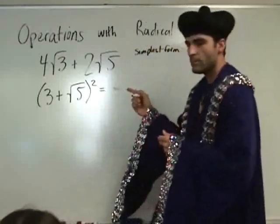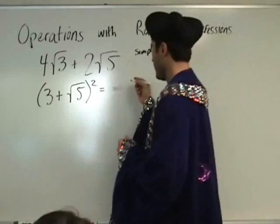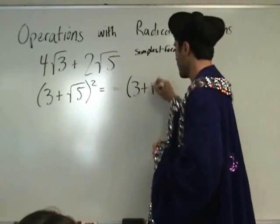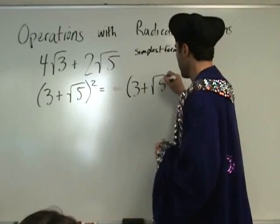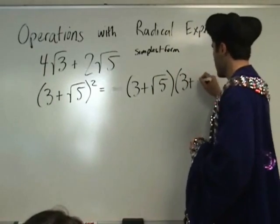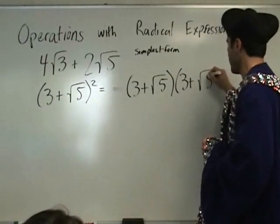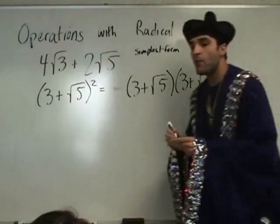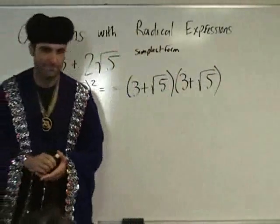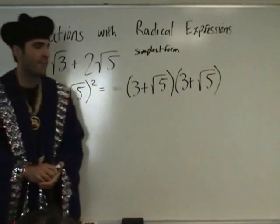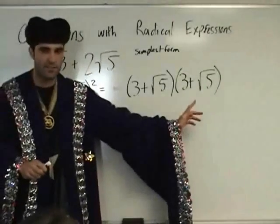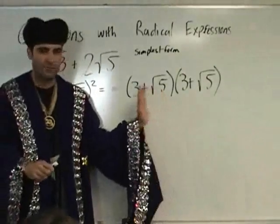First write it out: three plus square root of five, and then three plus square root of five. Three plus square root of five, and again three plus square root of five. Maybe foil it? For sure foil it. These are called binomials — you're adding two things together. So we foil.